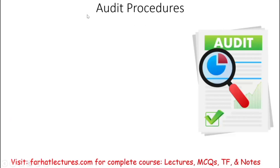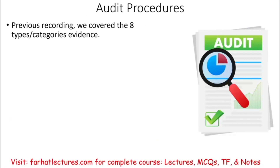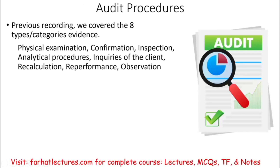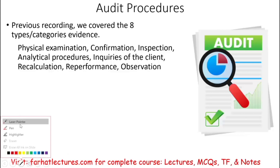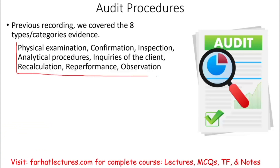Hello and welcome to this session in which we will discuss audit procedures. In the prior sessions, we looked at the eight types or eight categories of evidence, which are, as a review: physical examination, confirmation, inspection, analytical procedures, inquiries of the client, recalculation, reperformance, and observation. Those are the types of evidence, and we already covered each one of them separately.